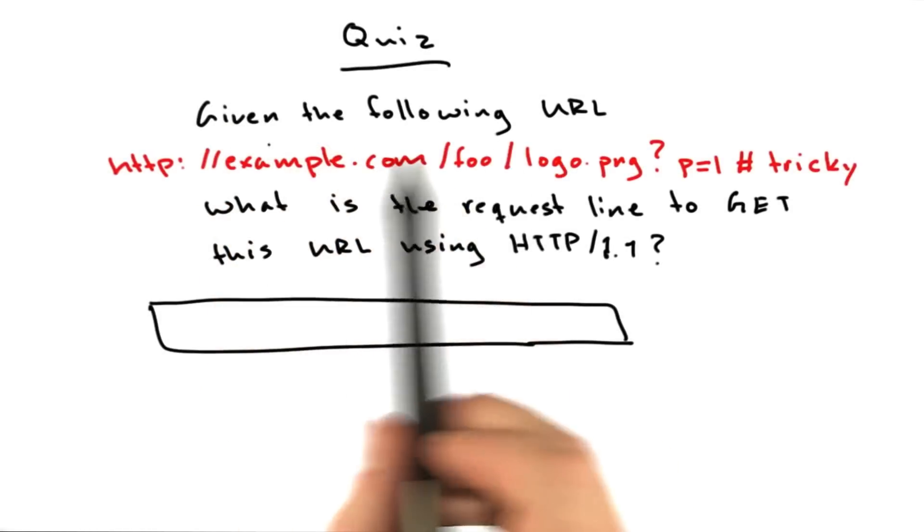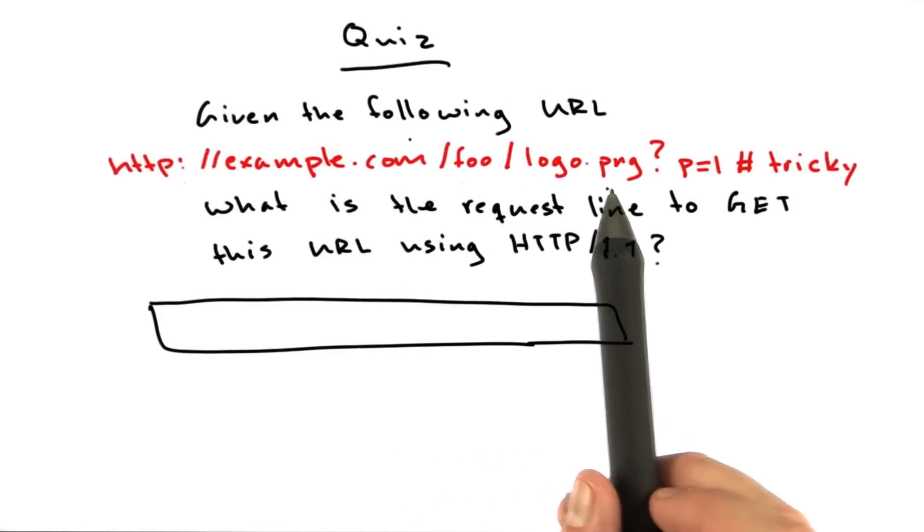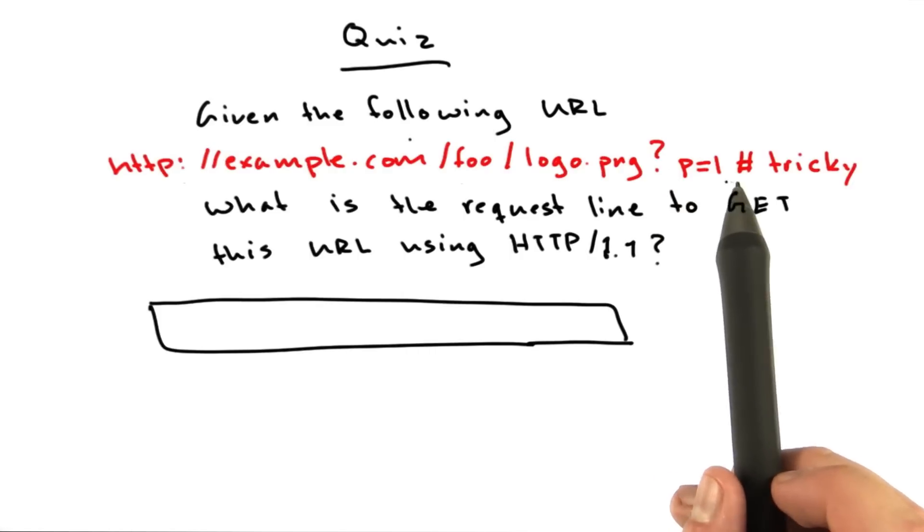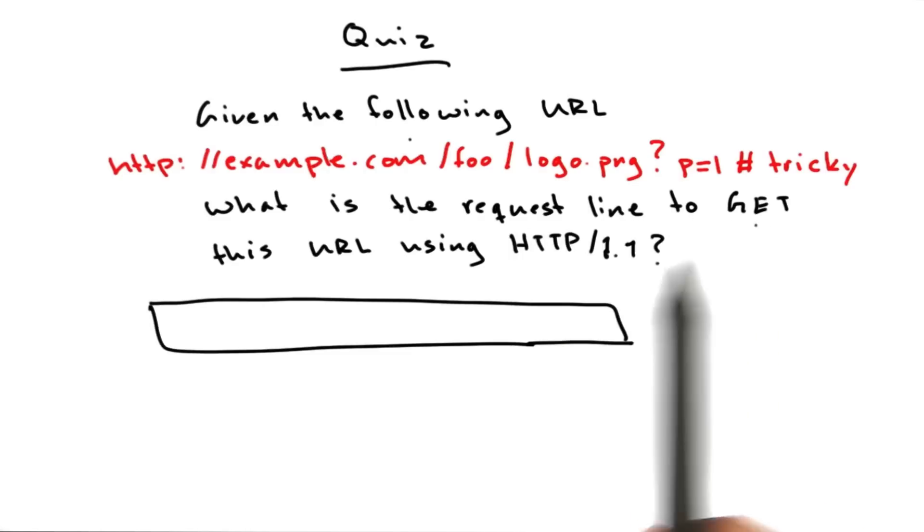Let's have a quick quiz. Given the following URL, example.com/foo/logo.png?p=1#tricky, what is the request line to GET this URL using HTTP 1.1?